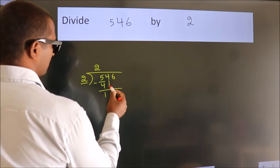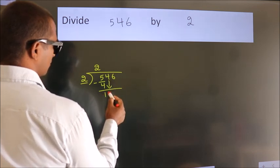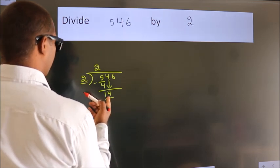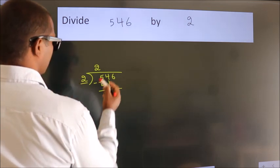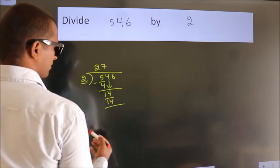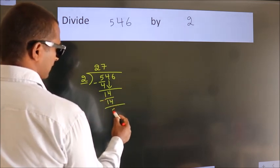After this, bring down the beside number. 4 down. 14. When do we get 14? In 2 table. 2 7s, 14. Now, we subtract. We get 0.